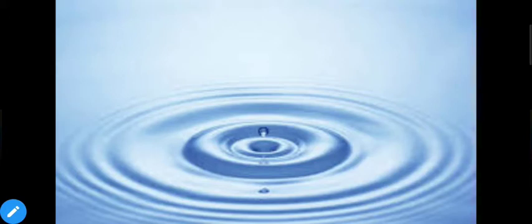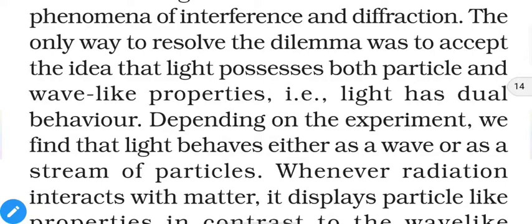We consider light to behave like waves so that it can explain interference or diffraction. But according to dual behavior, it also behaves like particles — electromagnetic radiation will behave as a solid object like a ball, pen, or stone. So it will behave as solid particles as well as waves. Depending on the experiment, we find that light behaves either as a wave or as a stream of particles.